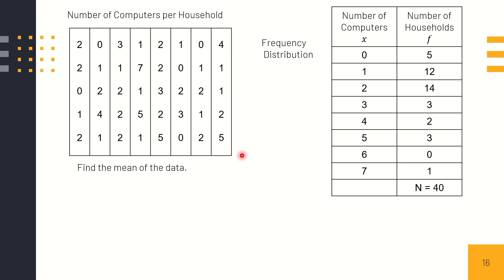Arrange it into two columns. The first column is the number of computers each household has, and the second column is the number of households. For example, the number of computers ranges from 0 to 7. This means 5 households out of 40 have no computer, 12 households have 1 computer each, and 14 households have 2 computers each. This is out of 40 households.